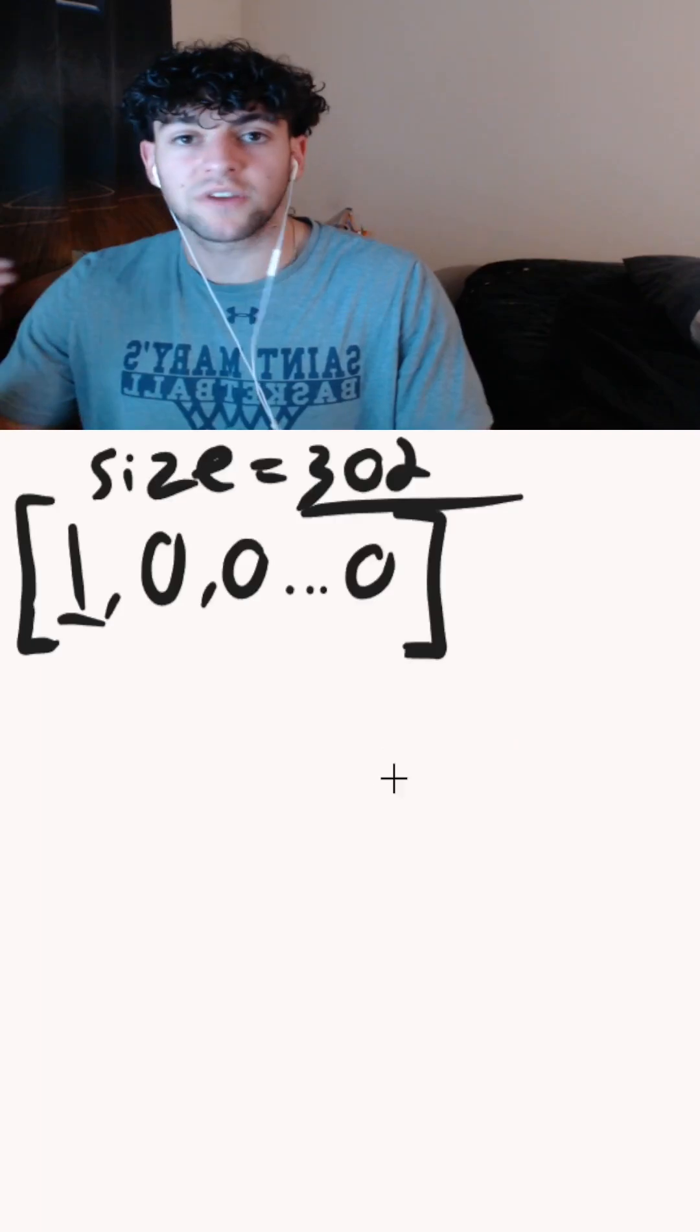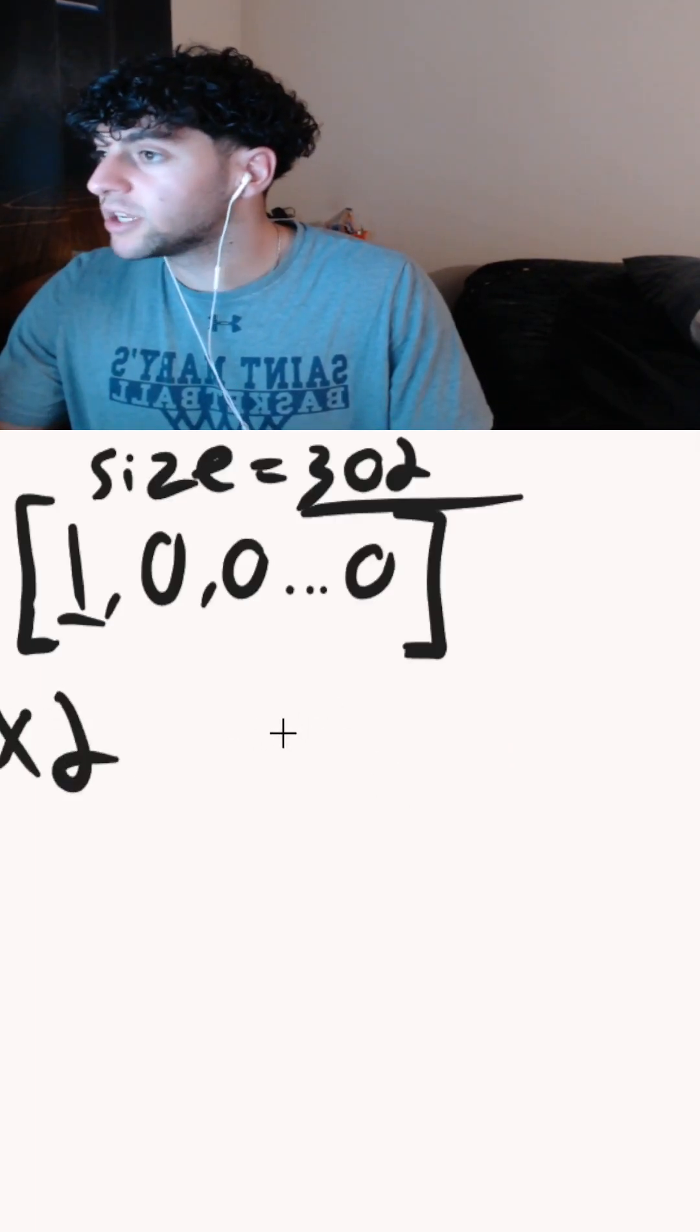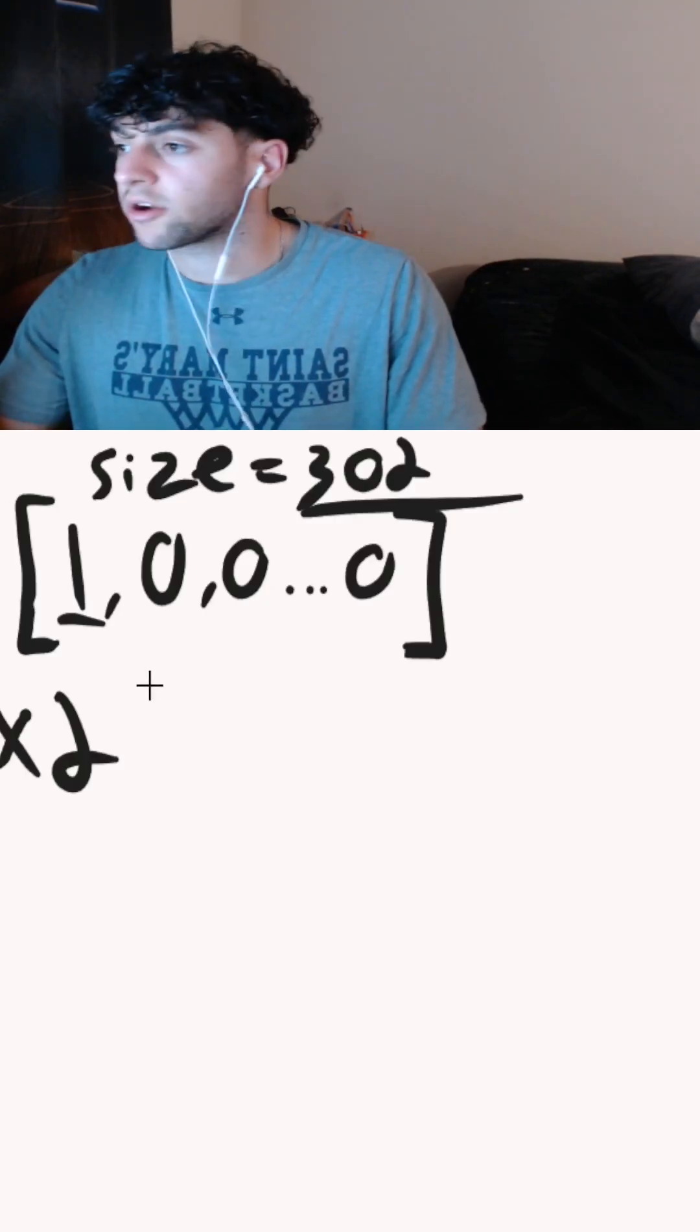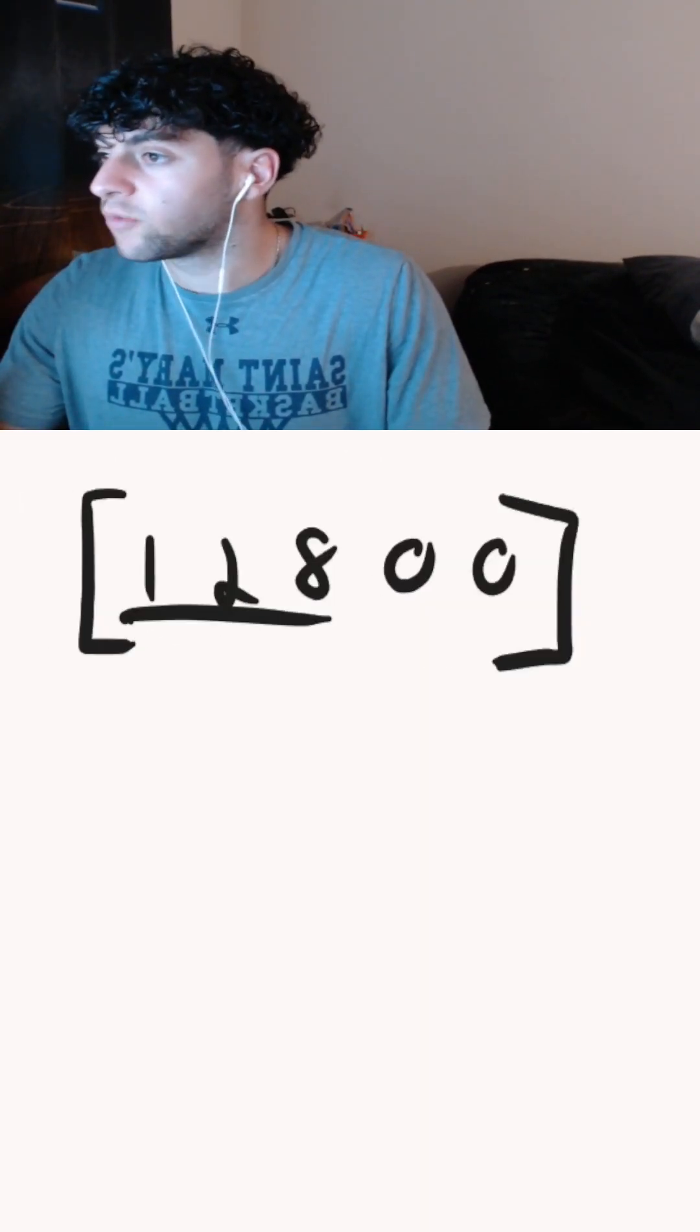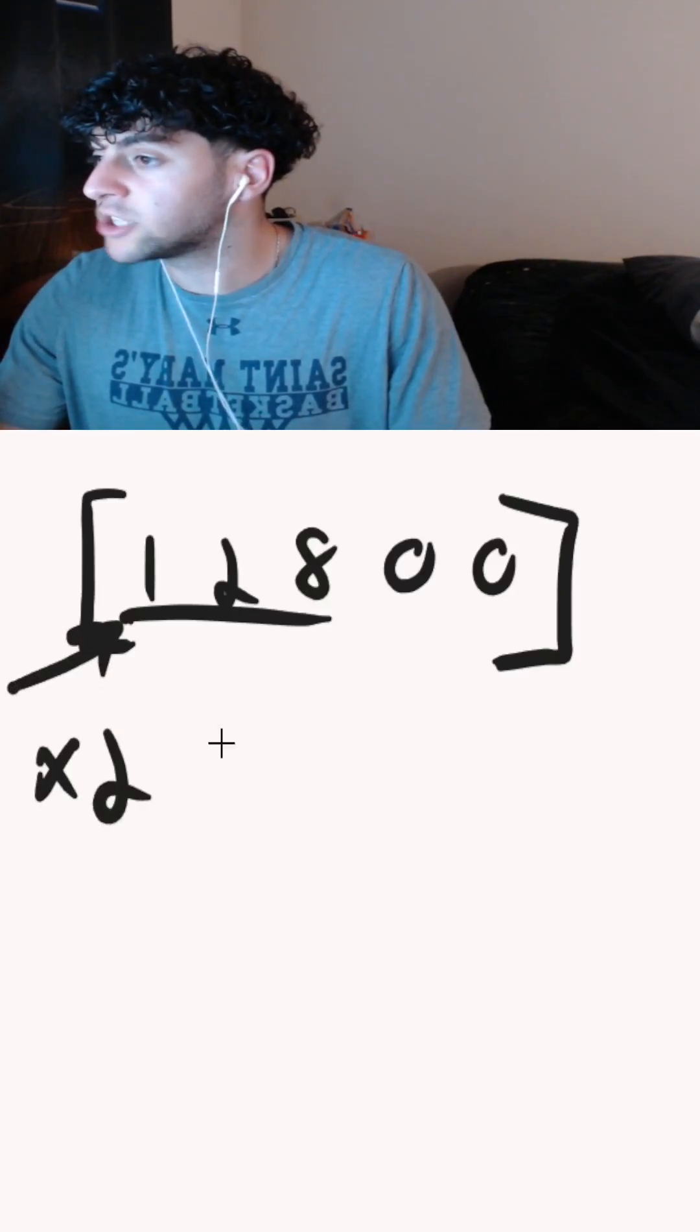We'll need a variable to track the number of digits in our current product so that when we multiply by 2 in each iteration, we only multiply digits that are in our product. If our array holds 128, the product size is 3, so we only multiply the first 3 digits by 2.